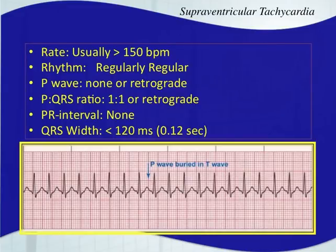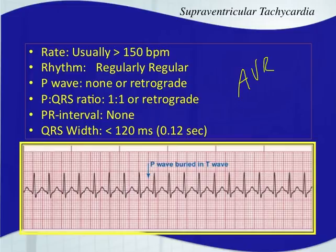The rules for supraventricular tachycardia: when talking about treating SVT, we mean the re-entry forms — there are two specific types: atrial ventricular re-entry tachycardia (AVRT) and AV nodal re-entry tachycardia (AVNRT). These rhythms are re-entry rhythms and need to be treated a certain way, very differently from other types of tachycardias.